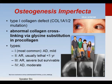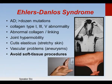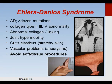Ehlers-Danlos syndrome is a condition many orthopedic surgeons see frequently. There are over a dozen different mutations that cause this, most commonly affecting collagen types 1, 3, and 5 — abnormal collagen or abnormal collagen linking. We see this as joint hypermobility, stretchy skin, and vascular problems. Soft tissue procedures in isolation should be avoided in these patients as they are prone to failure.